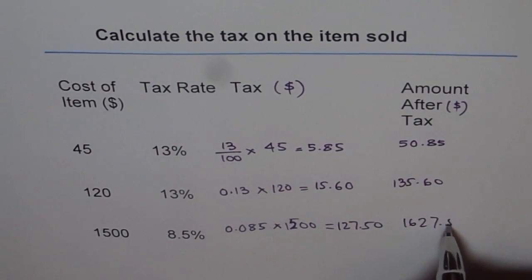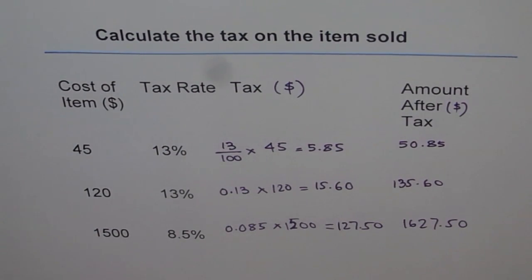So that is what you pay on an item which is costing $1500 and the tax rate on that item is 8.5%. I hope you understand how to find tax on the item and then how to find the total amount which is due for payment. Thank you.